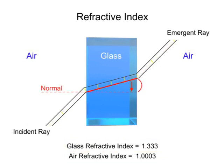Likewise, when the beam of light exits a highly refractive medium into a medium with a low index of refraction, the process is reversed. The bottom portion of the beam of light exits first and resumes at the speed of light.